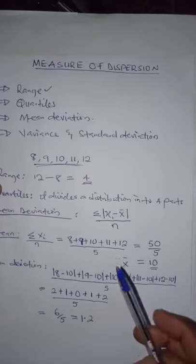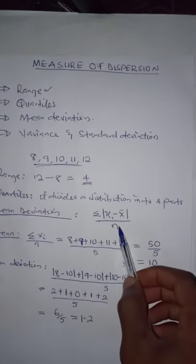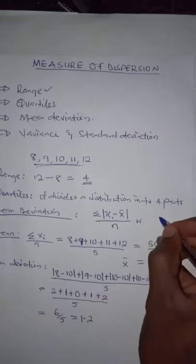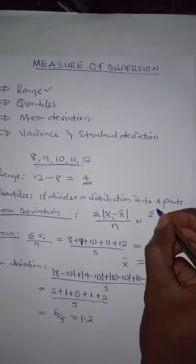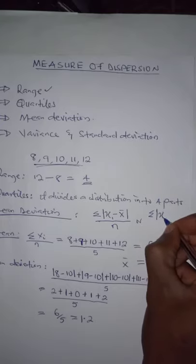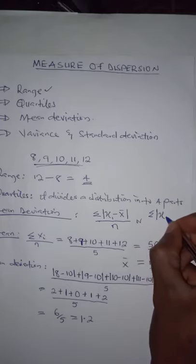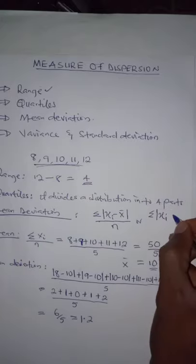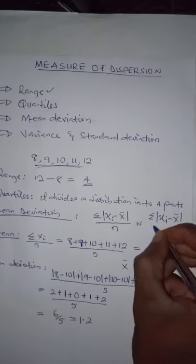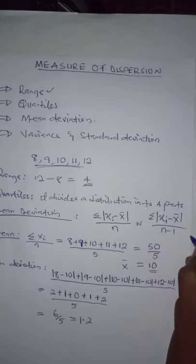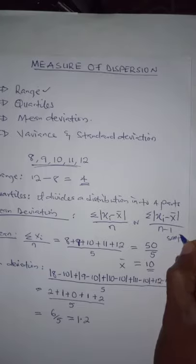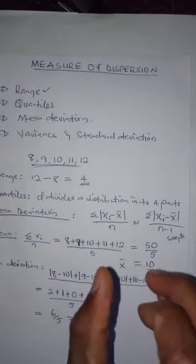For sample data, you have to subtract 1 from n. The formula becomes the summation of the absolute deviations from the mean X-bar, divided by n minus 1. This is for sample data, which is a subset of the population.